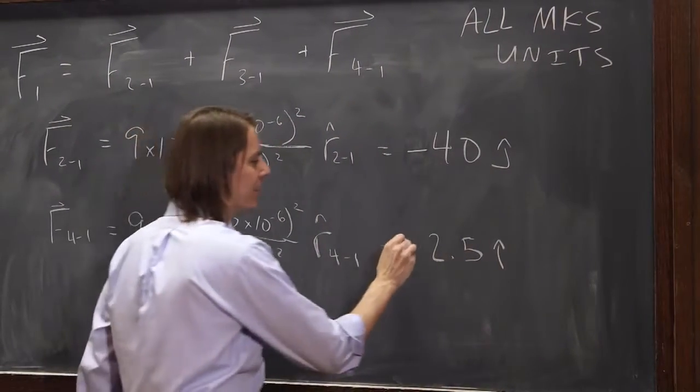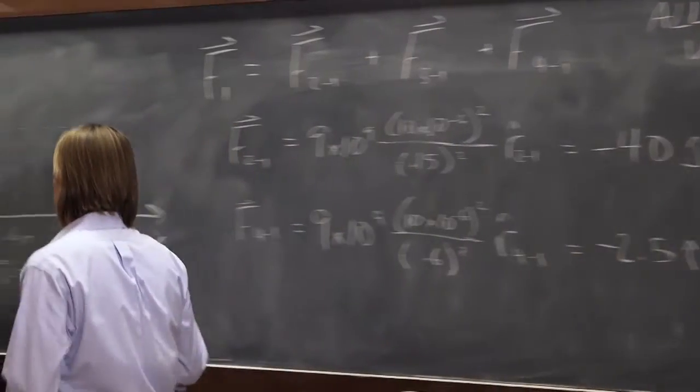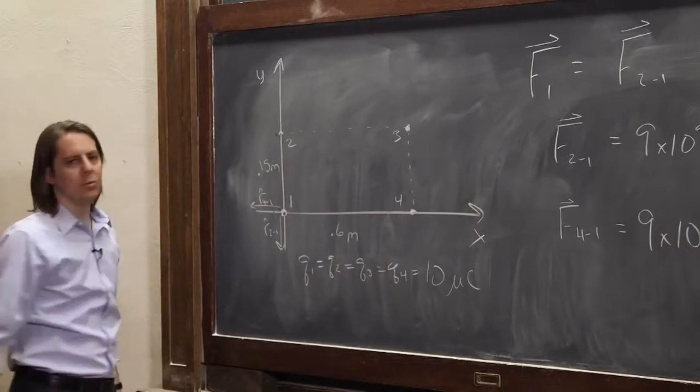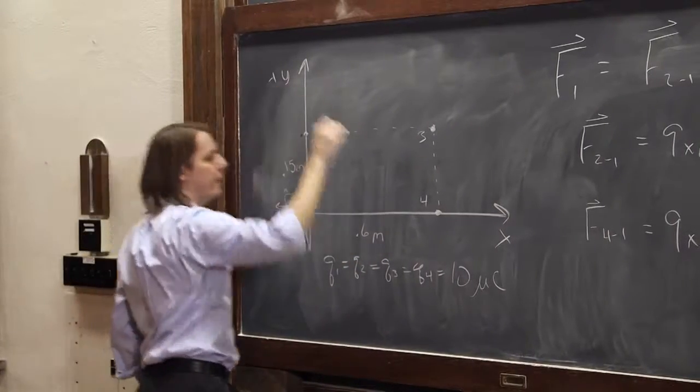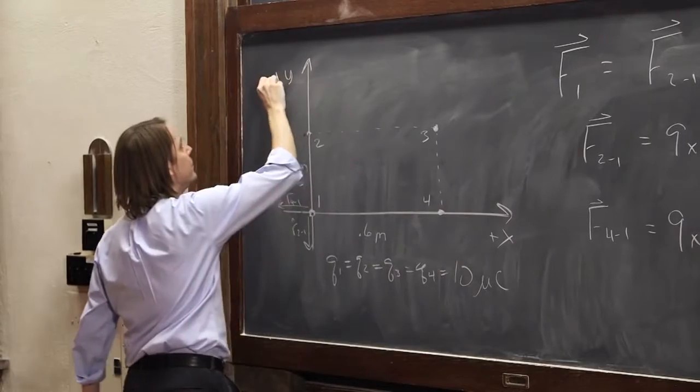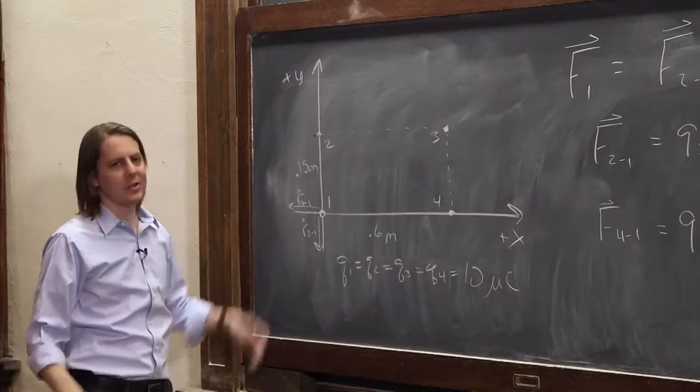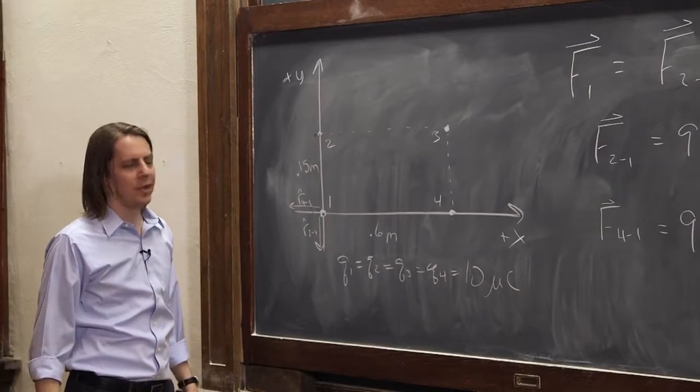We assumed x was positive this way and y was positive that way. There you go. So again, we're just kind of looking at it and using inspection to decide which way it points.